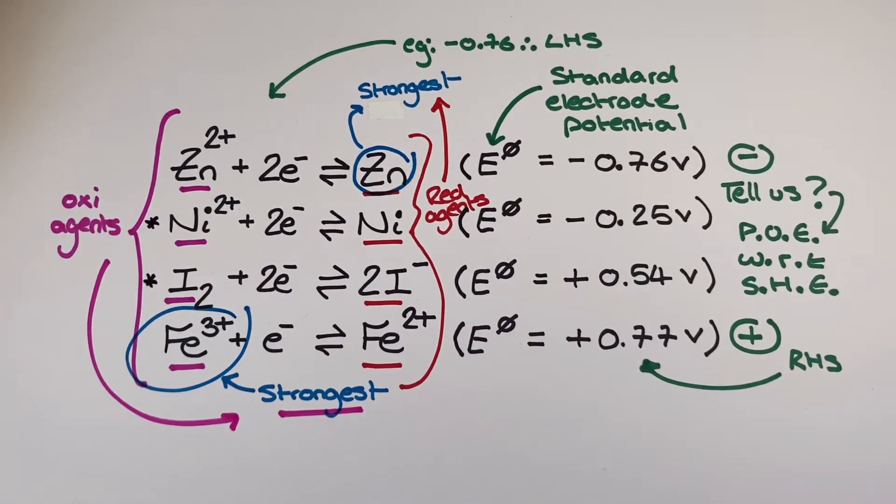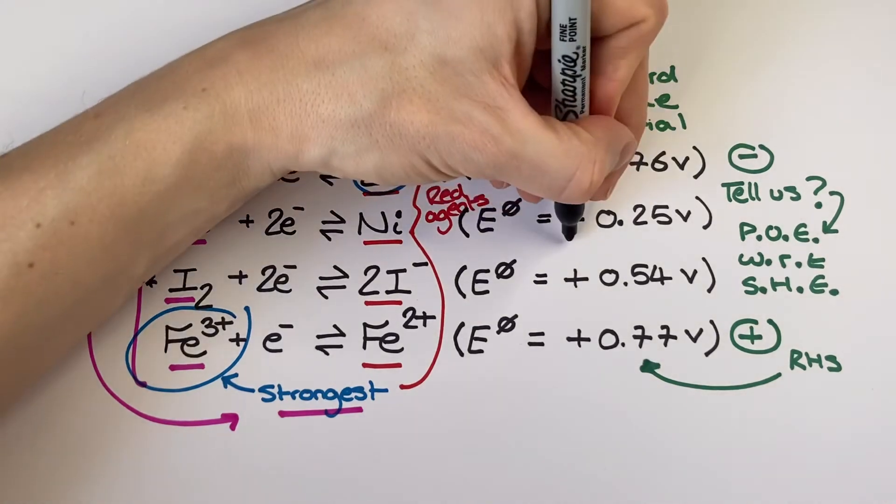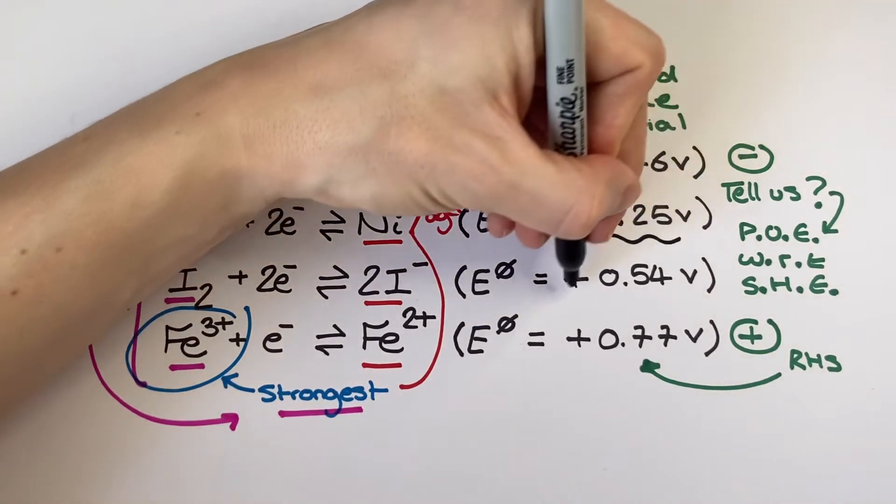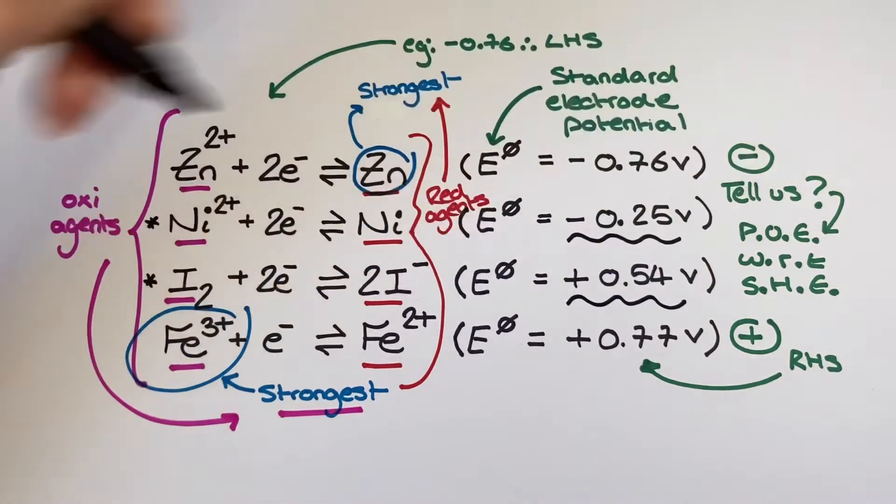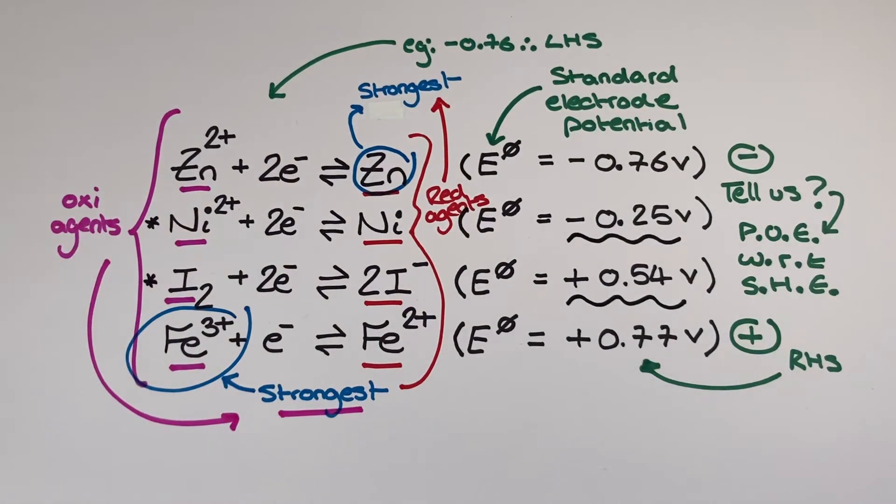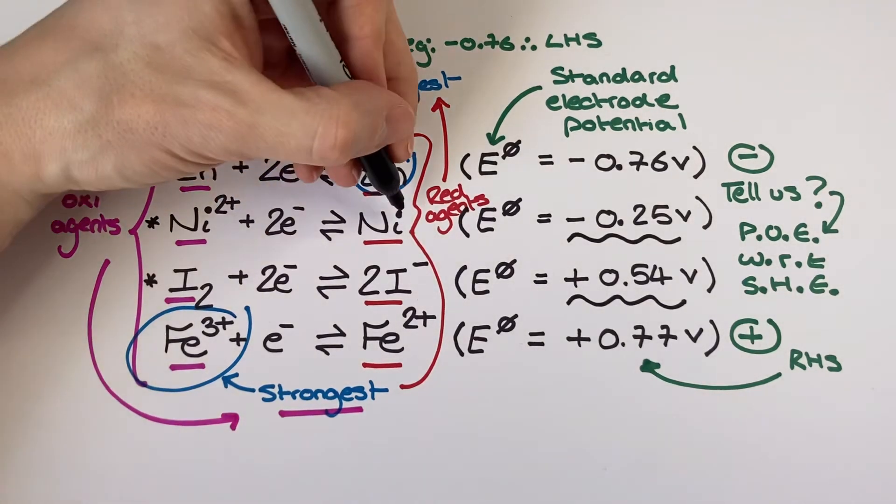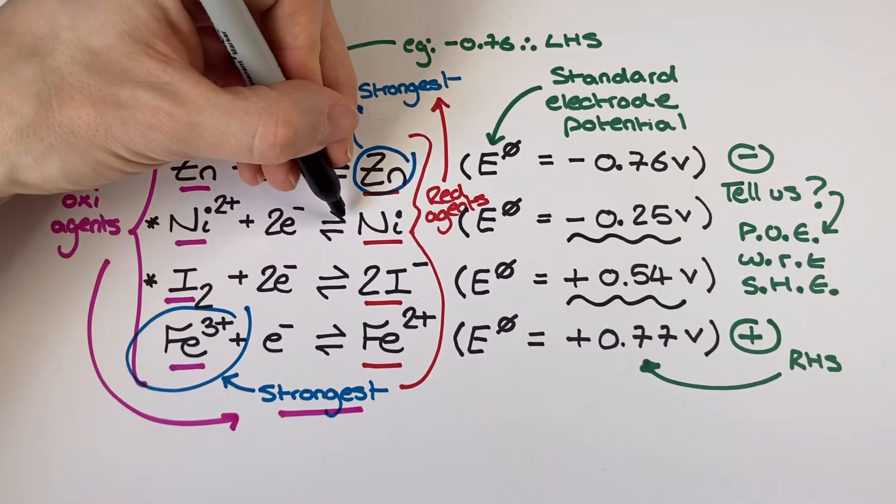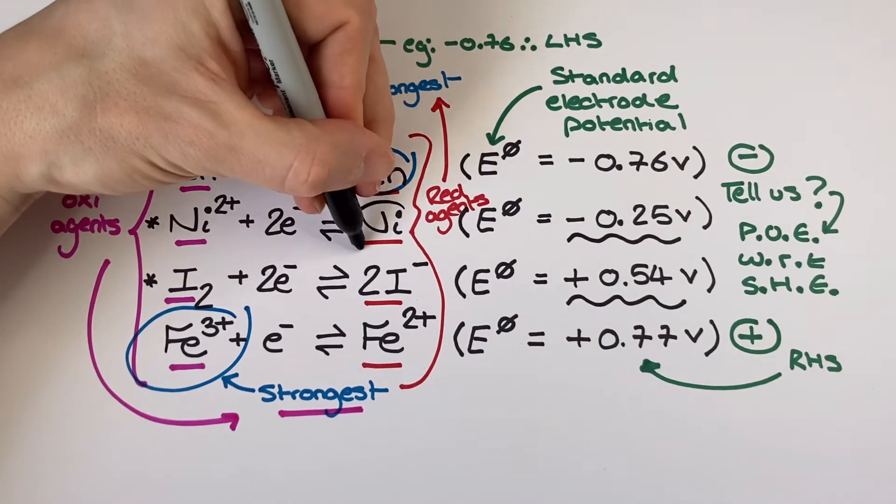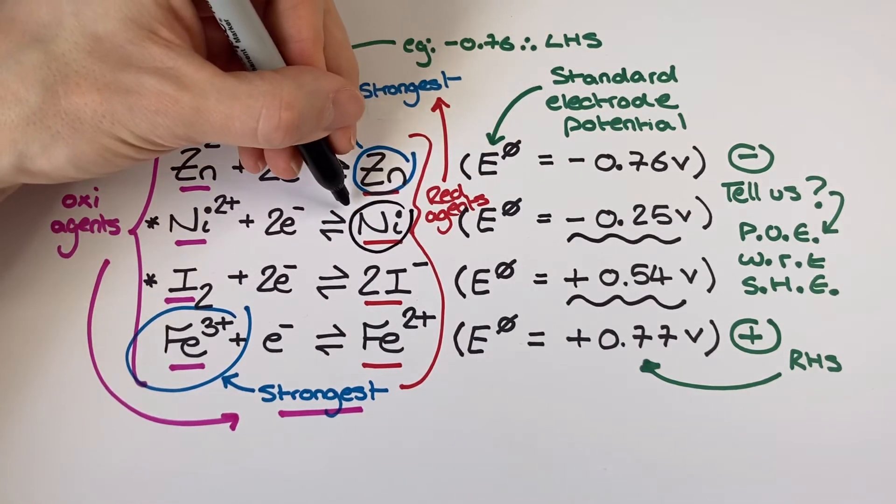So the final skill I want to cover with you is how I can use an electrochemical series to determine the overall redox reaction for an electrochemical cell or to determine if a reaction is feasible in the direction it has been written. And to do this I'm going to need to select two half equations from my electrochemical series. Here you can see I've put an asterisk next to the nickel and iodine half equations.